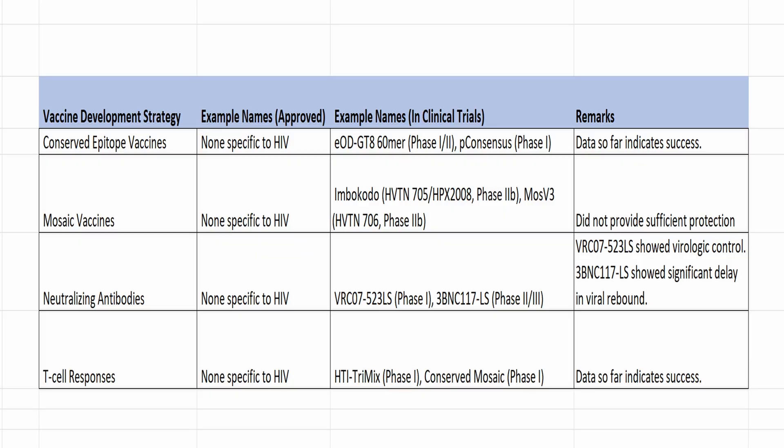The GAG protein is a key structural protein with relatively conserved regions, crucial in the assembly and release of new viral particles. The POL enzyme is responsible for critical functions in the viral life cycle, with some regions exhibiting conservation. While variable, conserved regions within the ENV glycoprotein are potential targets for vaccine development. There are four types of vaccine development strategy at play: conserved epitope vaccines, mosaic vaccines, neutralizing antibodies, and T cell responses.